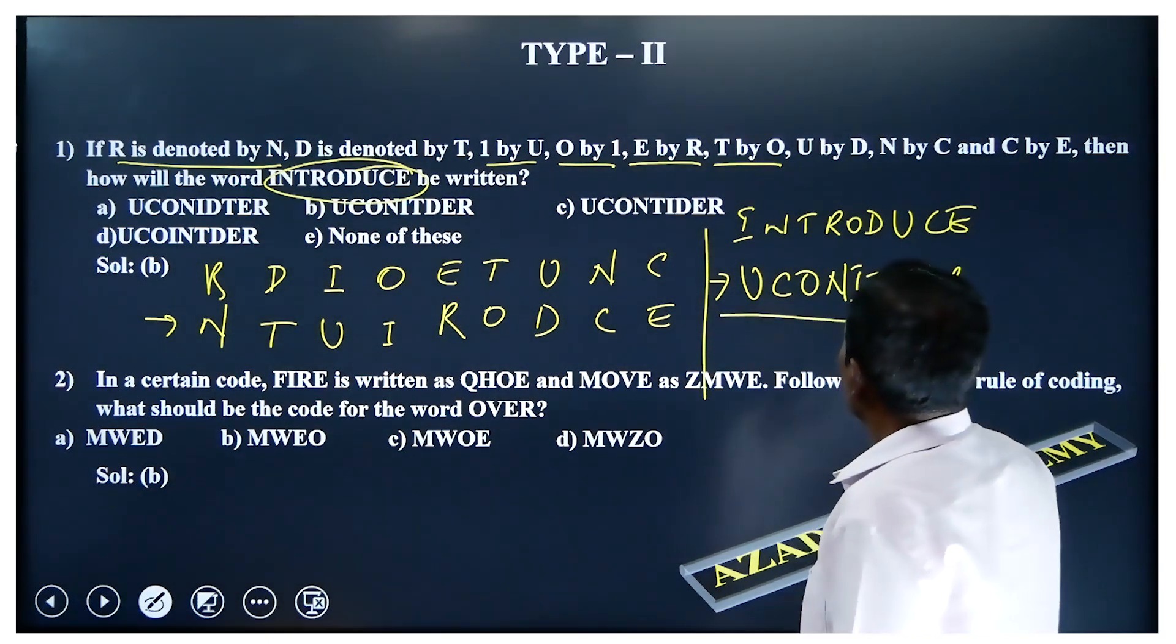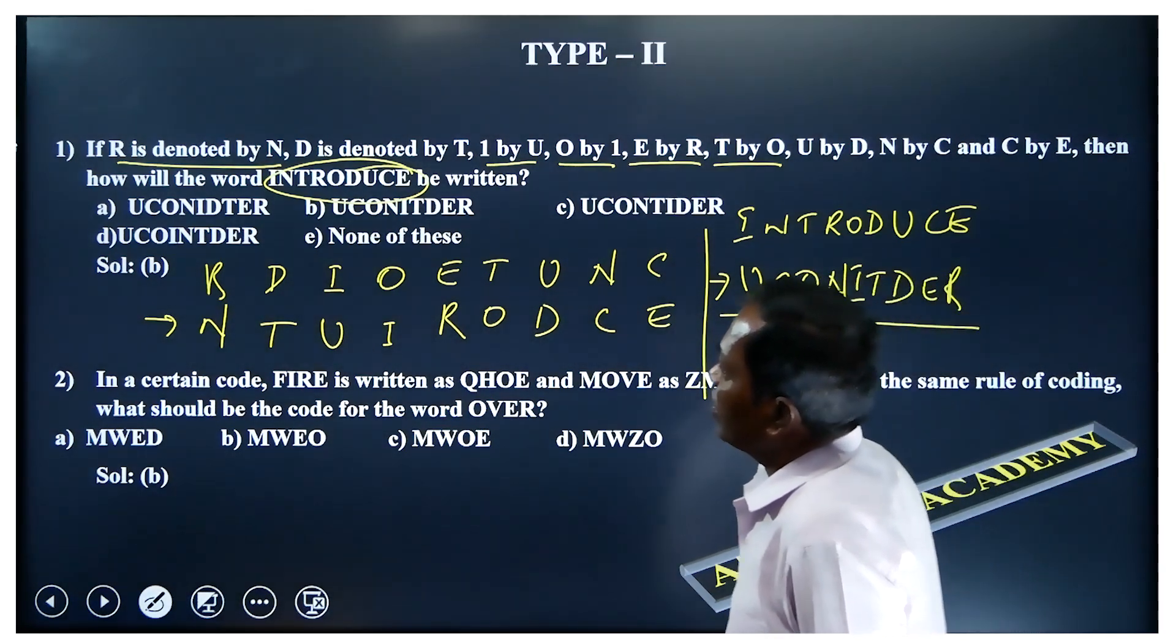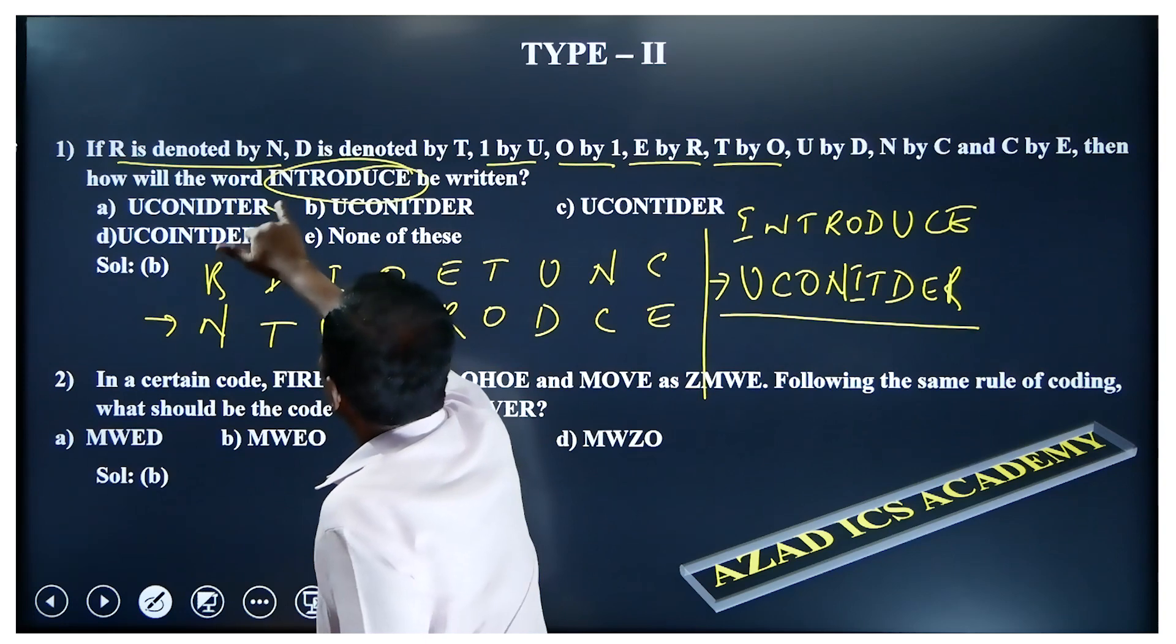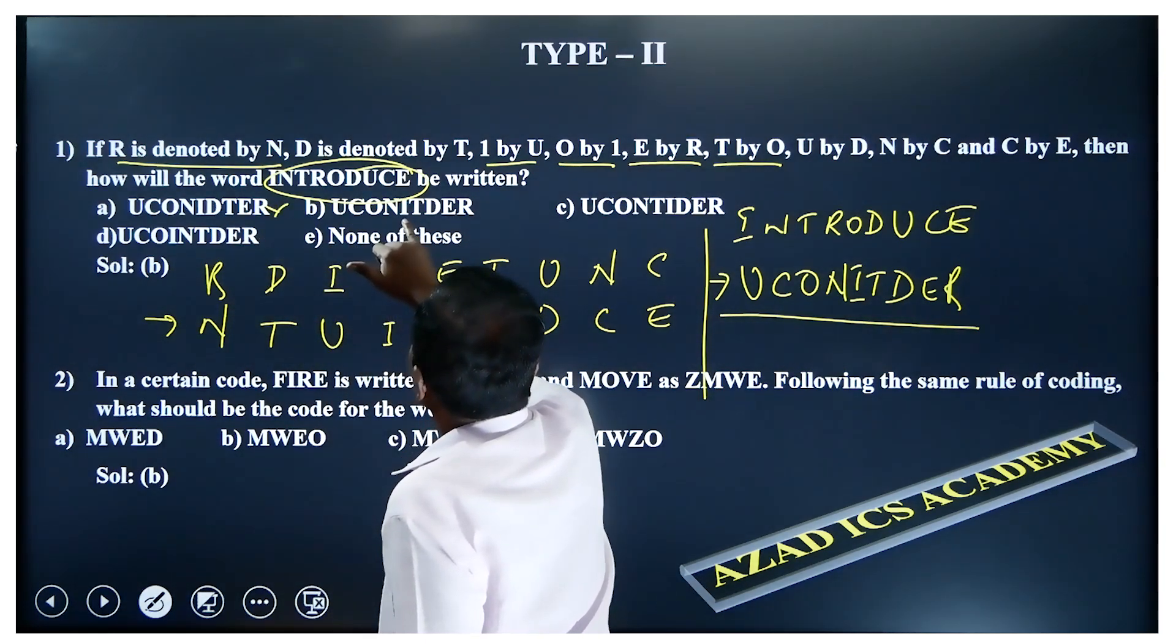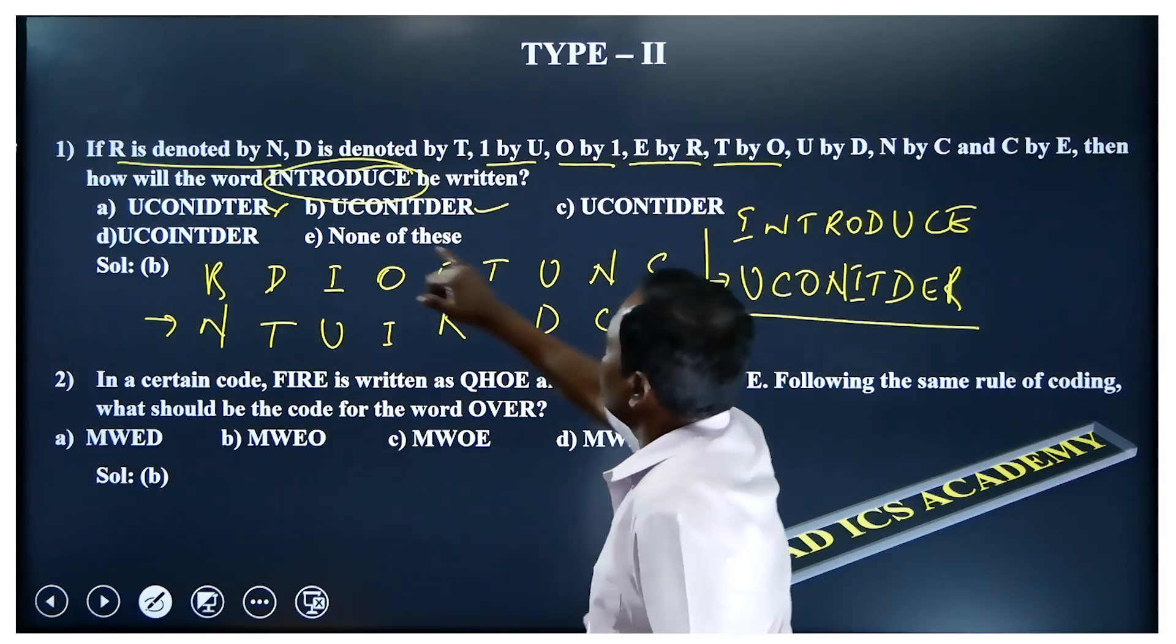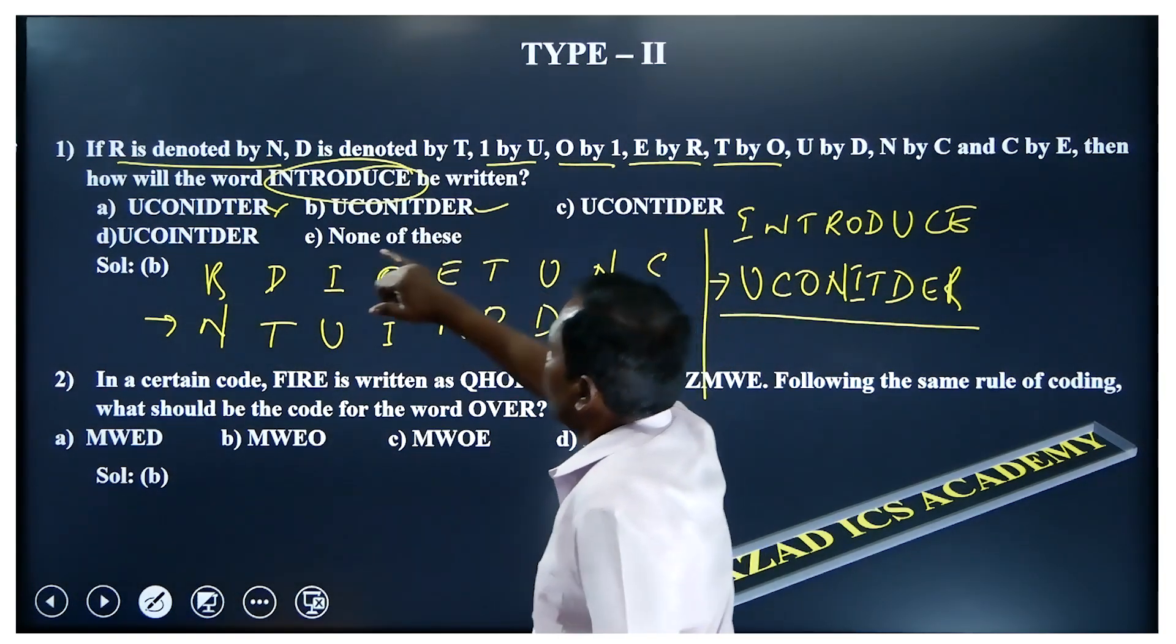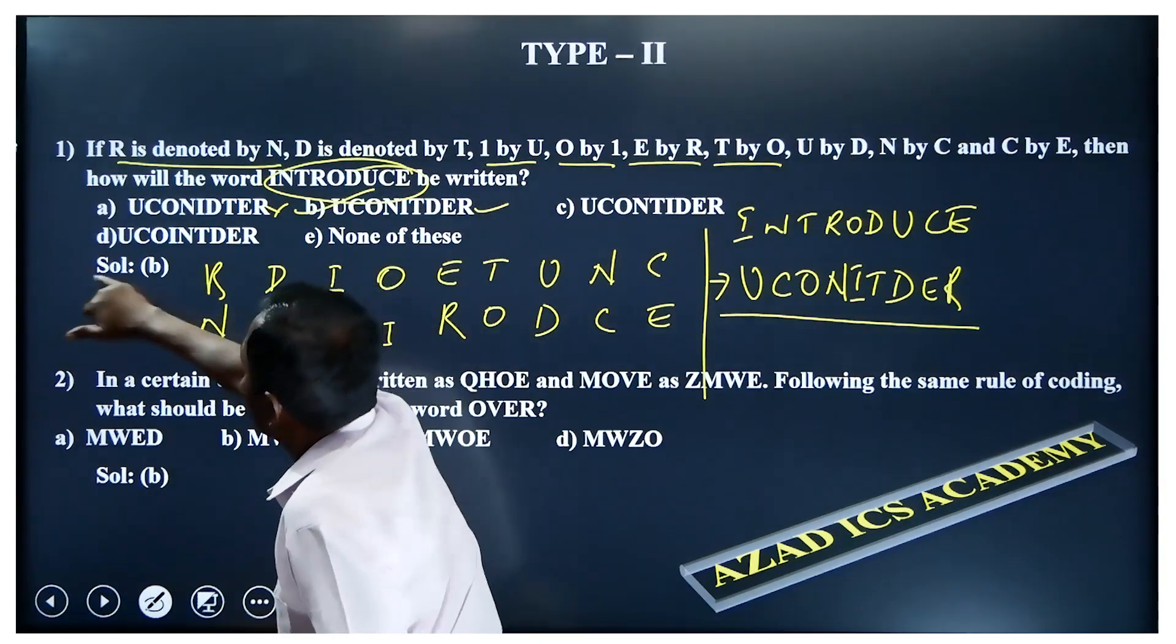So this is the word: UCONITDER. U-C-O-N-I-T-D-E-R. But yes, this is the more appropriate one. Right. First step, it's a direct letter coding.